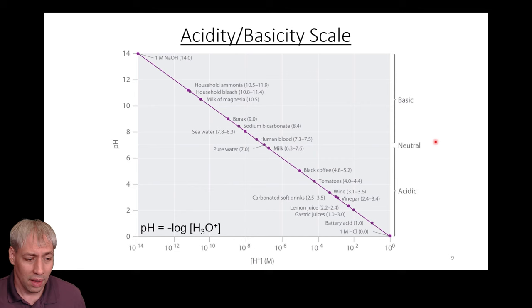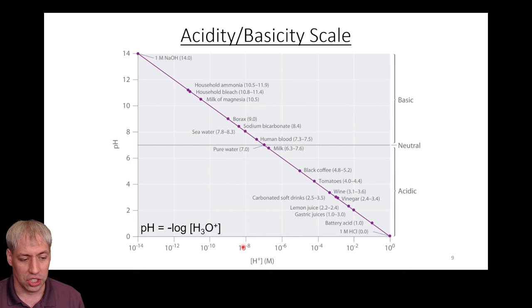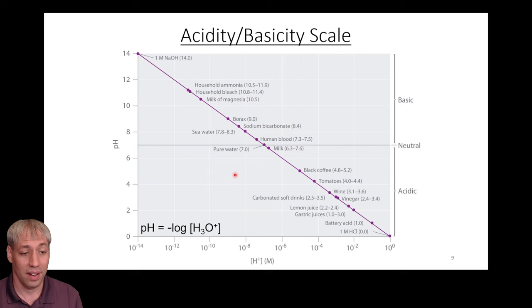A graph comparing the H⁺ concentration scale (10⁻¹⁴ to 10⁰) to the pH scale shows a linear relationship since they are related by the negative log. The pH notation is far more convenient — we say pH 1, 6, or 12 rather than 1×10⁻¹, 1×10⁻⁶, or 1×10⁻¹². They mean the same thing; pH is just an easier way to represent those concentration values.